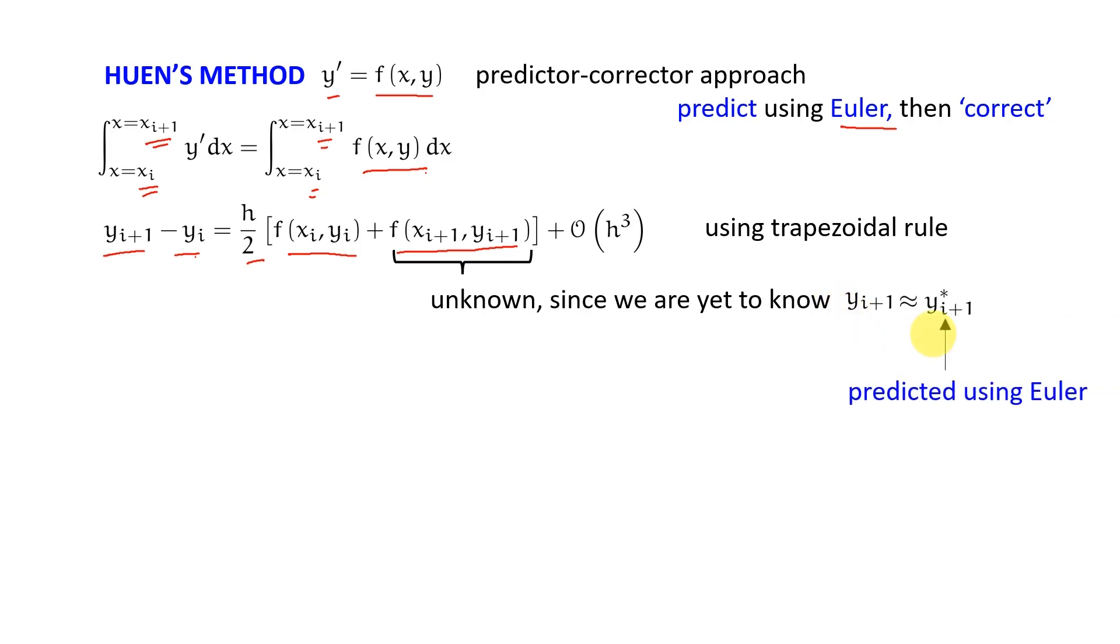So what we do here is I approximate yi+1 as yi+1*, and this star value is the predicted value using Euler type method, which means yi+1* = yi + h·k1 where k1 = f(xi, yi). This is my predicted value. Now I take this predicted value and go back in this trapezoidal rule expression.